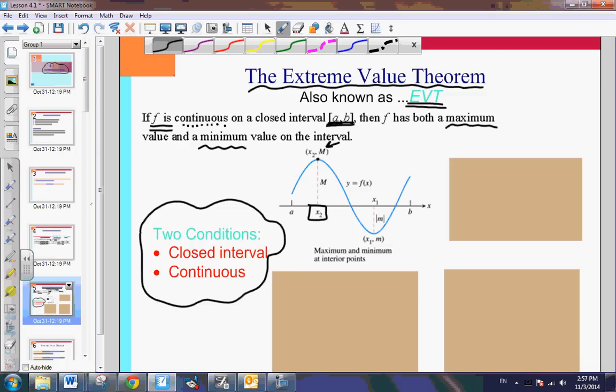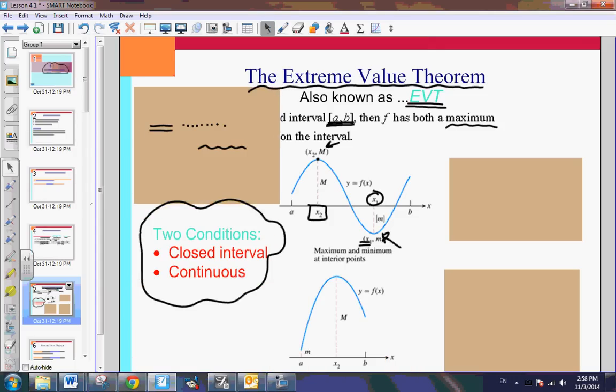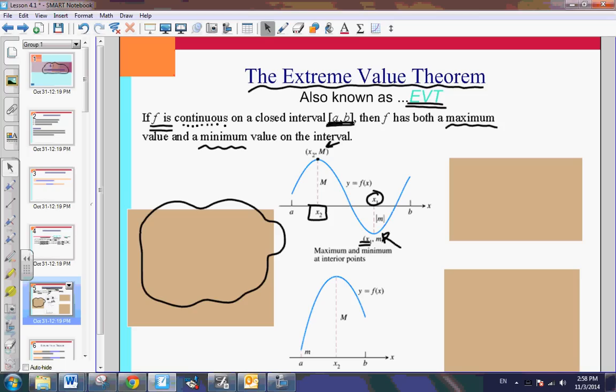Here our minima occurs at x sub 1, and the minimum is lowercase m. Now, we also have a few other key things here. Here's another graph. So now if we look at this example, it's a little different, but notice it's a closed interval and continuous. In here, we have a maxima, and now notice the maxima is on the interior, and here would be my absolute minima. Now, the absolute minima is an end point this time.